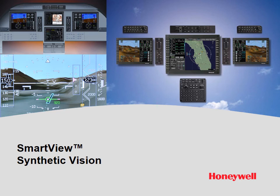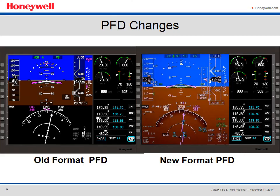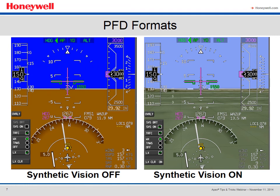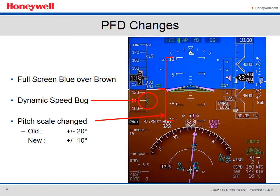SmartView is Honeywell's name for its synthetic vision system. I'll touch on a few unique features and how to use them. When SmartView was introduced, we changed the standard PFD format to a full blue over brown format, ensuring a seamless transition from when synthetic vision is off to when it's on. Some other major changes were the addition of the dynamic speed bug and the pitch scale change. SmartView is a conformal display, meaning the display elements and background terrain are at the same scale — so when the flight path symbol shows you'll clear a mountain top, that is what will happen. It's more than just a pretty picture.